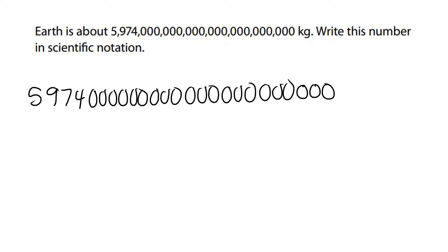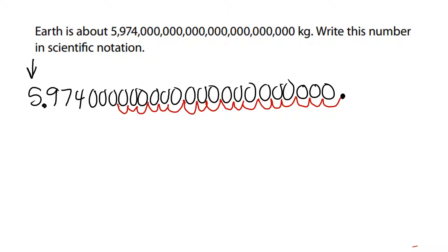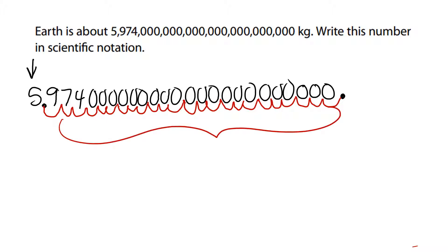For this next problem, we're going to take our decimal, which is here at the end. If there's no decimal written, it always starts at the end. We're going to move it behind the first number, which is a five. We have to move it 24 times.